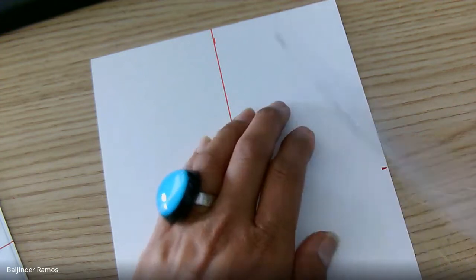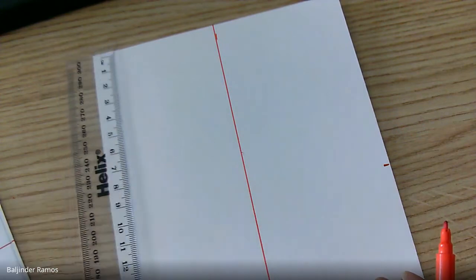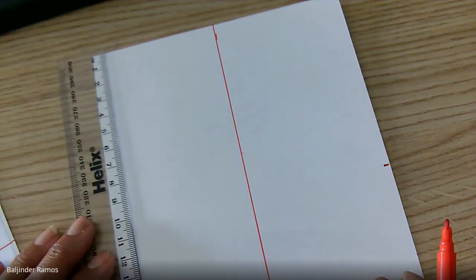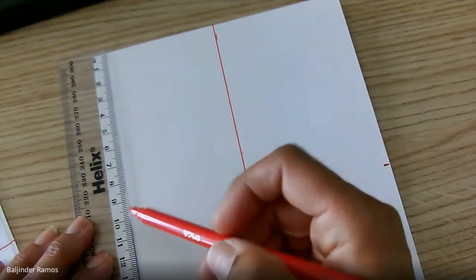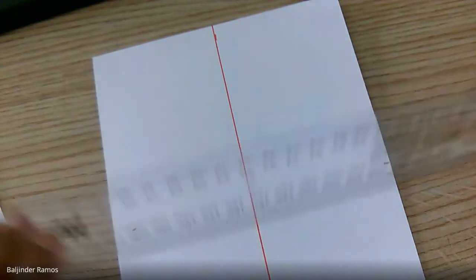Put a dot, move the ruler to the other side. So it's 10.5. Join the two dots together.